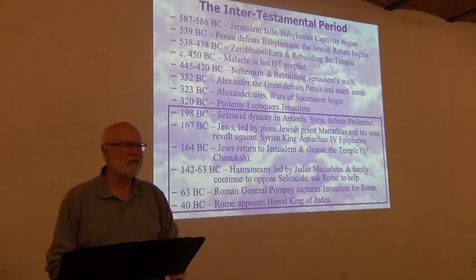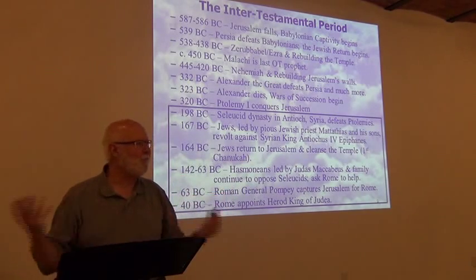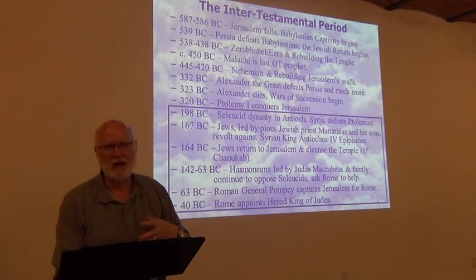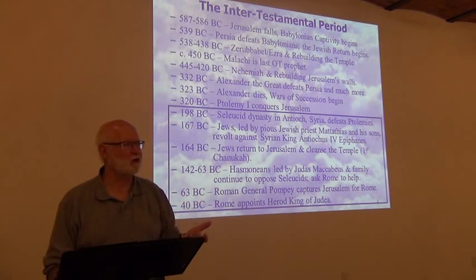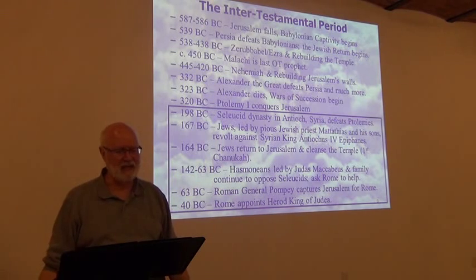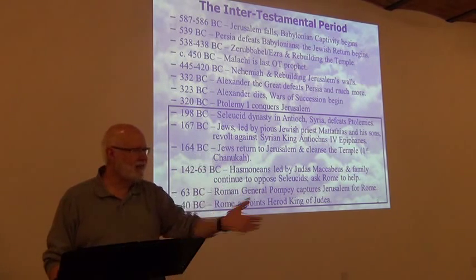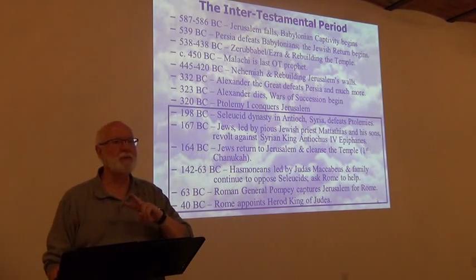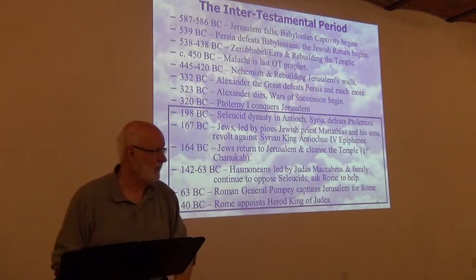The Hasmoneans drove the Seleucids back, took control of that area, and set up one of the very few monarchies Israel ever had — the Hasmonean monarchy, which was their family name. Then, because they were still getting trouble from the Seleucids, they made the mistake of appealing to Rome. Pompey, the great general, said 'Sure,' and in 63 BC he came down and conquered Jerusalem. They did get rid of the Seleucids, but the Romans conquered the whole area. Then in 40 BC — roughly 40 years before Christ — the Romans appointed Herod, who had been trained in Rome and was friendly with the Roman imperial family, as king of Judea. He was not Jewish; he was Idumean, from an area south of the Holy Land — a foreigner they put in charge.